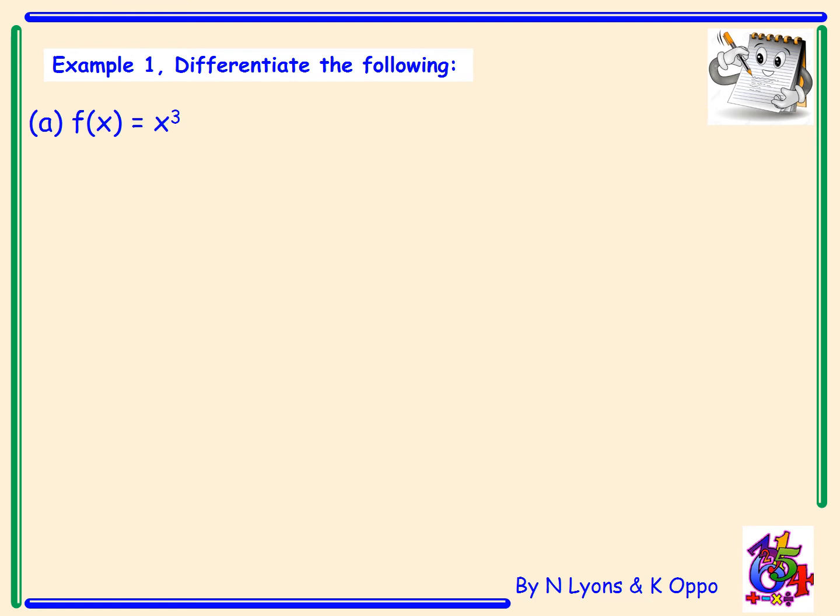Example A: If we have f(x) equals x cubed, to differentiate we need to write this as f'(x). We bring the number 3 down in front of x and then subtract 1 from this power. Final answer is 3x squared.